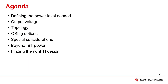This training video series will cover the following topics. In this video, we will talk about defining the power level needed and the output voltage. With those two pieces of information, we can move to the second video where we will discuss topologies. The third video will cover ORing options, also known as combining PoE with another power source — adapter power or auxiliary power. From there, we will cover special considerations that may change the design, then discuss beyond BT power, which is a very unique case. Finally, we will end with finding the right TI design to base each new design off of.